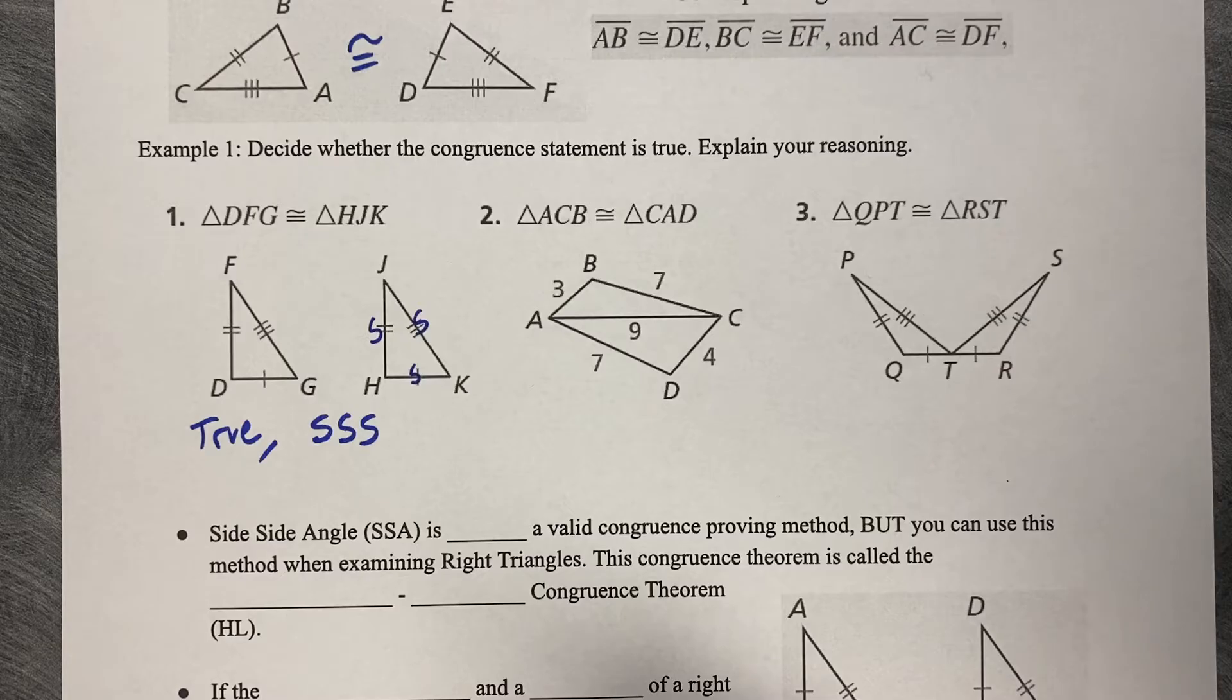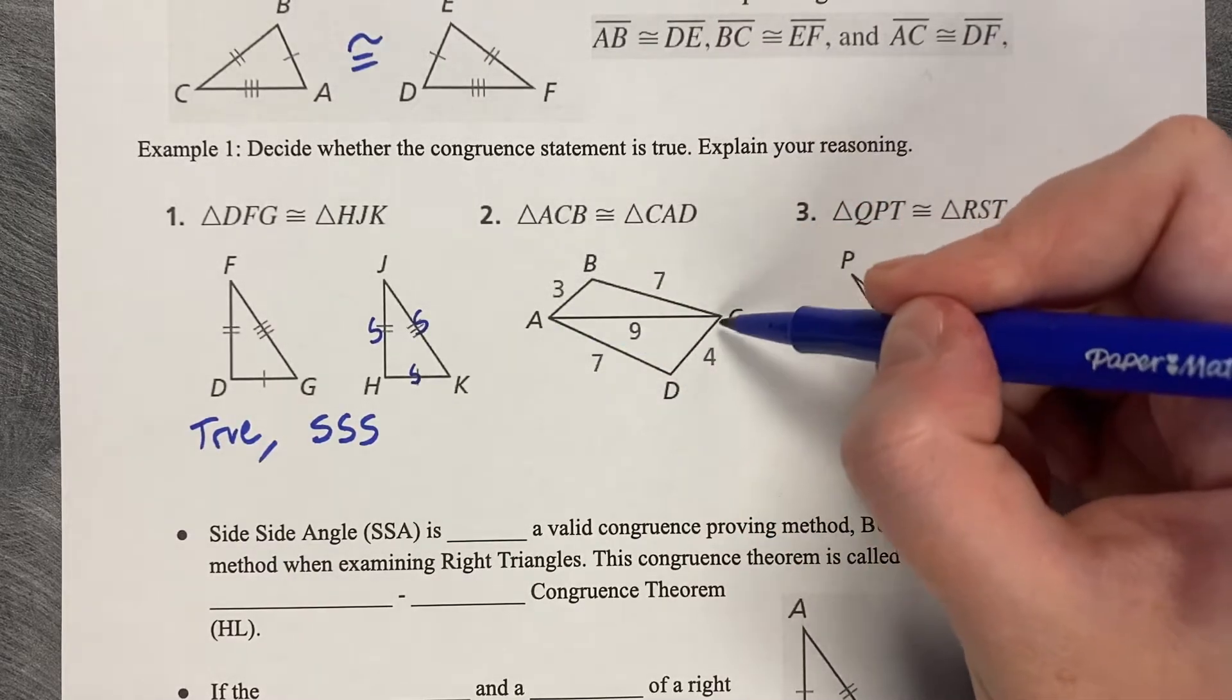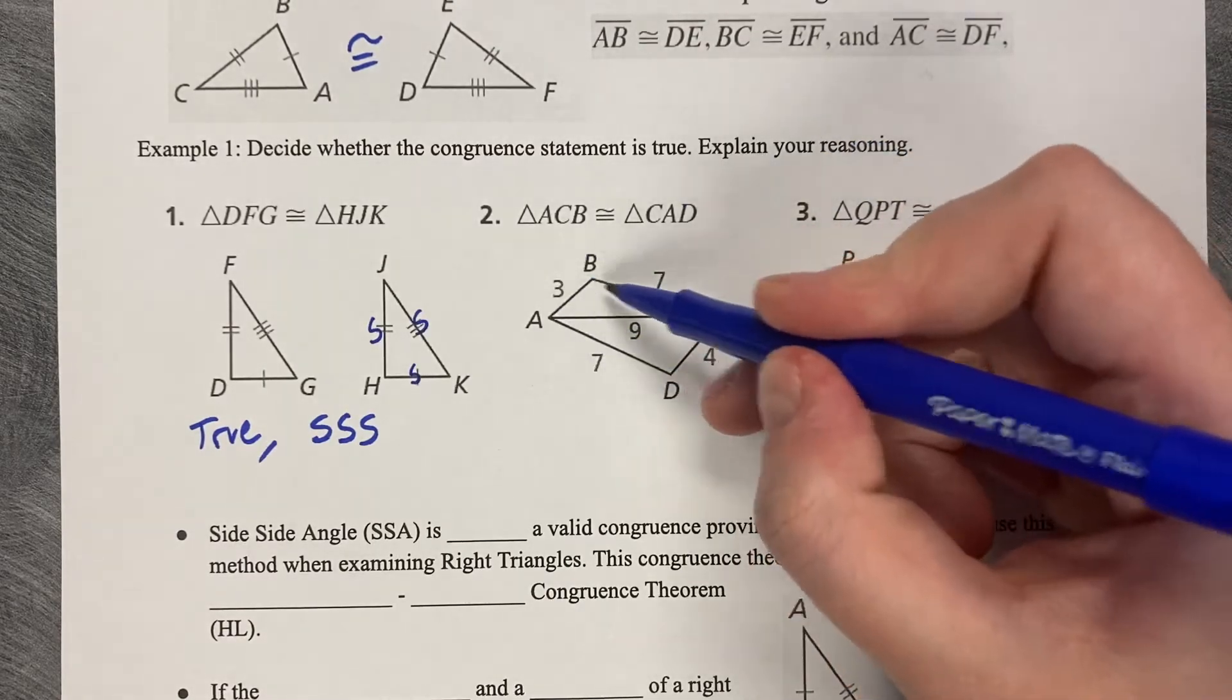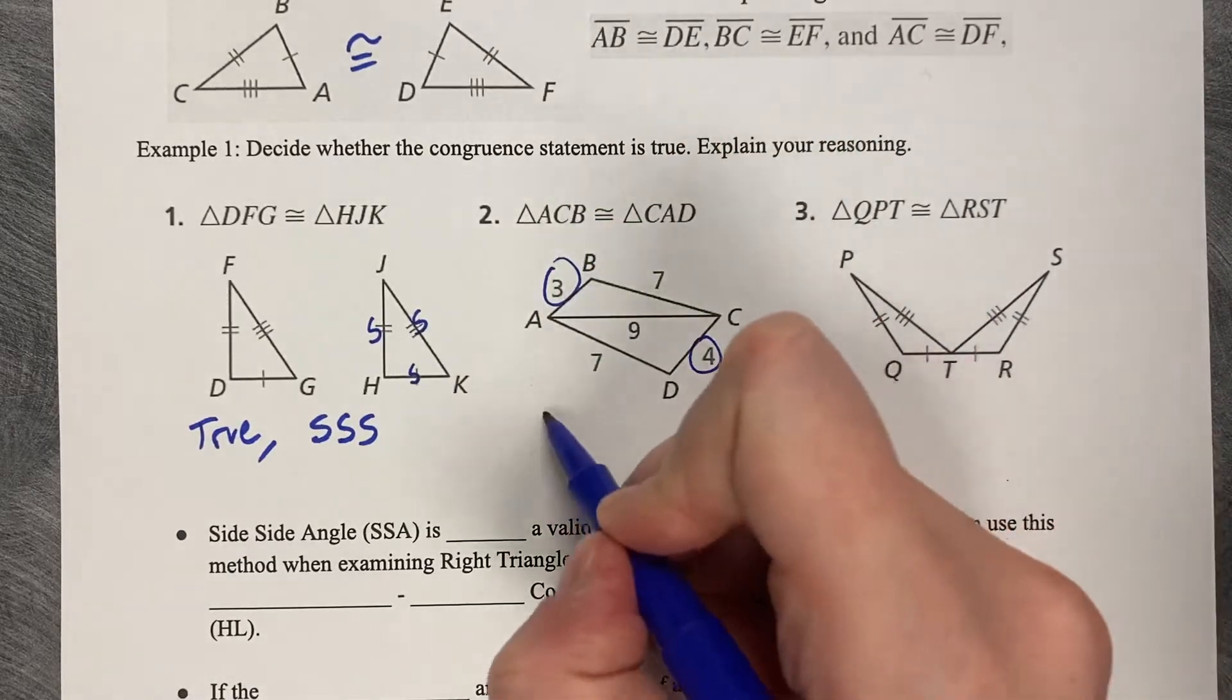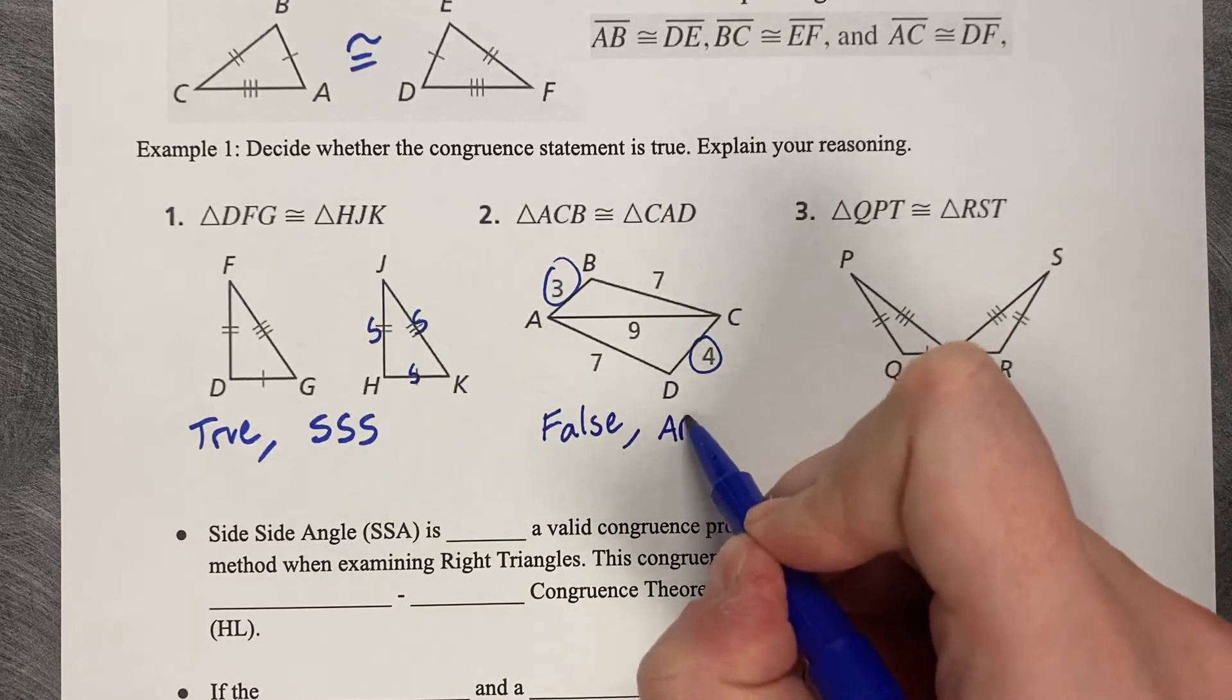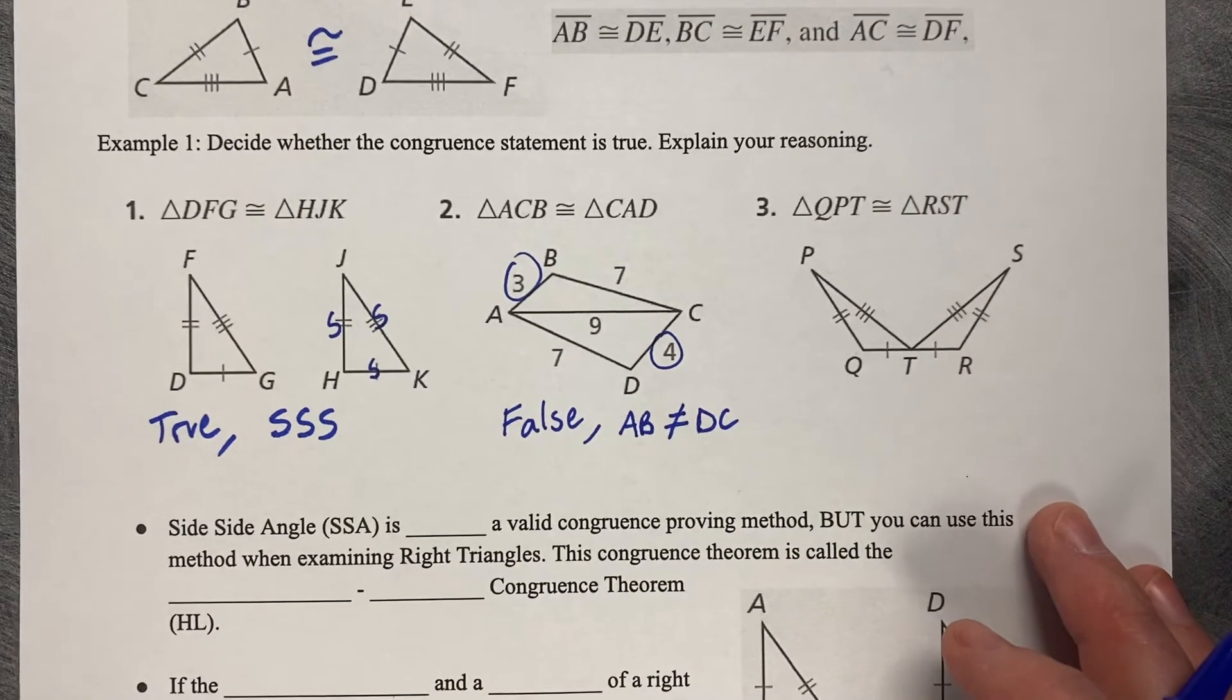Next, is triangle ACB congruent to CAD? They share a side of 9, but on this triangle, DC is 4 and AB is 3, even though AD is 7 and BC is 7. There are two side lengths that don't match. So this is false because AB is not equal to DC.